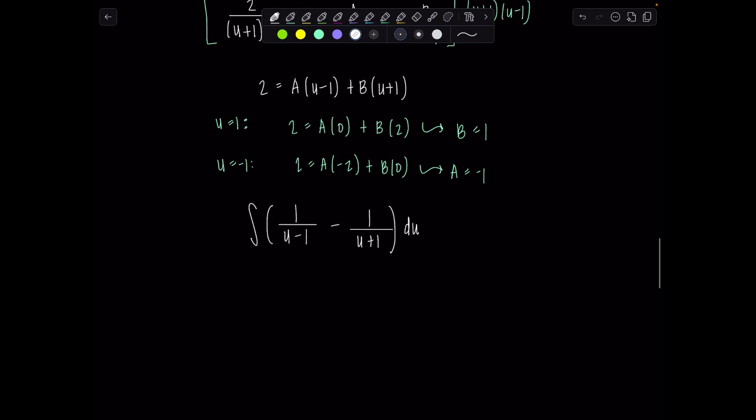Okay, perfect. From here, you should be able to anti-differentiate. No big deal. Natural log absolute value u minus 1 minus natural log absolute value u plus 1. And then now's the time to put plus c.